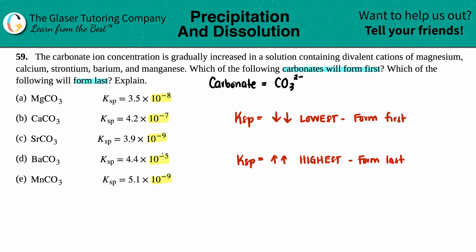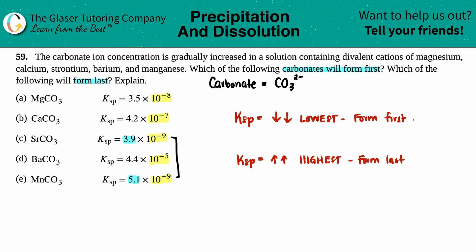Between the exponents -8, -7, -9, -5, and -9, a negative nine is the lowest. But since we have two values at -9, that's when we look at the coefficients in front: 3.9 versus 5.1. The lowest number forms first — 3.9 is lower than 5.1 — so the carbonate that forms first is SrCO₃.